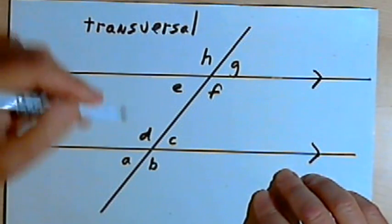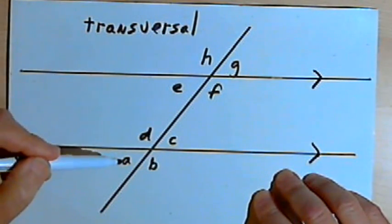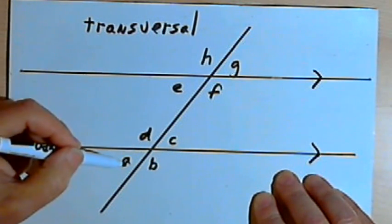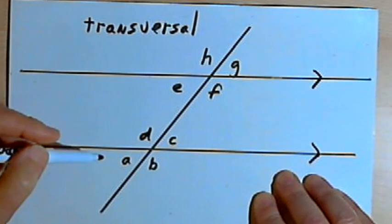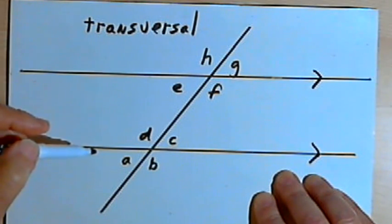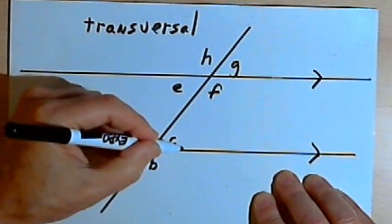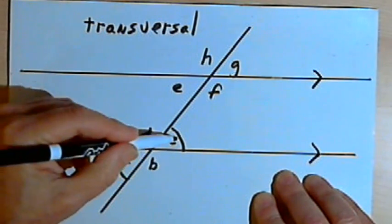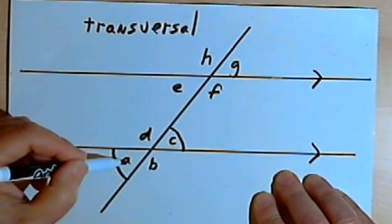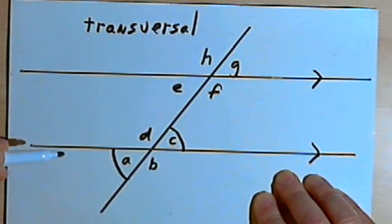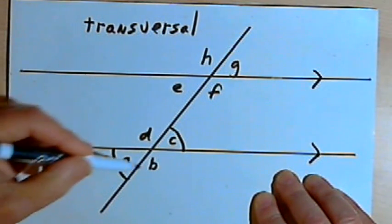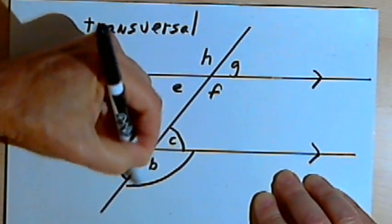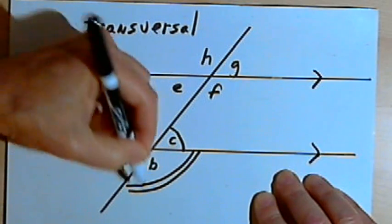I want to explore the relationships between all these angles. Starting with A, B, C, and D: A and C are vertical angles, and vertical angles are equal to each other. I'll mark those with a single arc at A and another at C to show they have the same measure. Angles B and D are also vertical angles, so they equal each other.